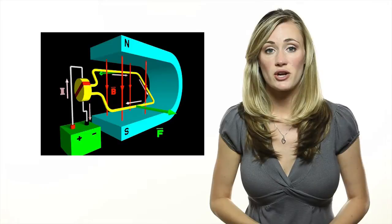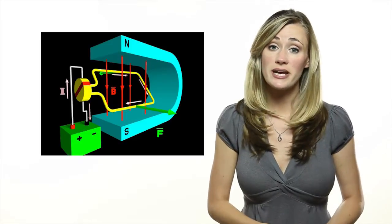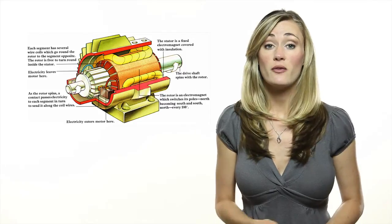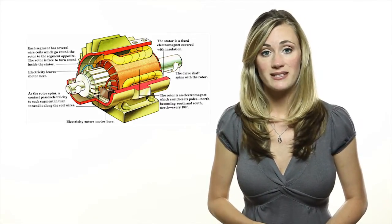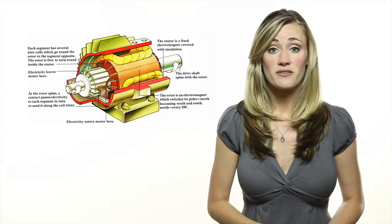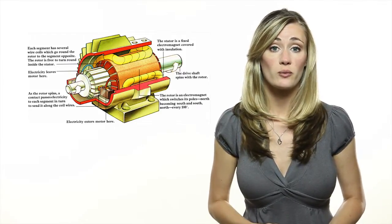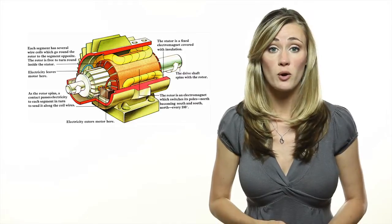An electric motor has a stationary part called a stator and a rotating part called a rotor. The stator generates a magnetic field and the rotor is an electromagnet that rotates inside this field. Because opposite poles of a magnet attract and like poles repel, the magnetic south pole of the rotor will move toward the magnetic north pole of the stator.